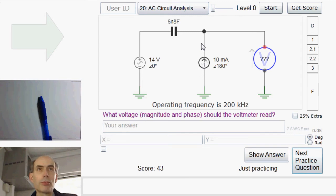So, all of this 10 mA is flowing through this capacitor, which means the voltage across this capacitor is going to be 10 mA at 180 degrees times the impedance of the capacitor, which is 1 over j times omega, which is 2 pi times 200 kHz this time, times the capacitance, which is 6 nanofarads.